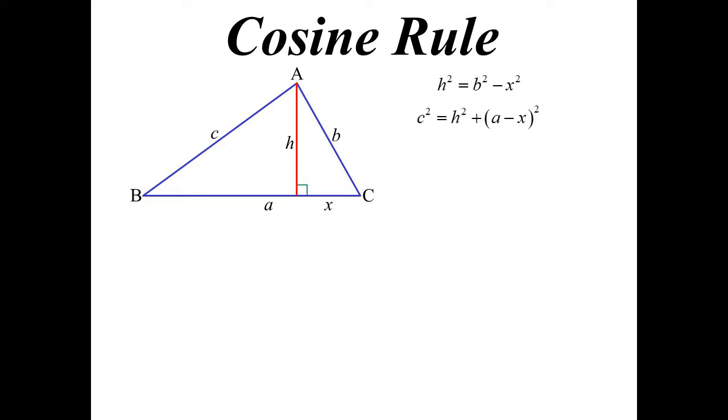C squared would be H squared plus, well, that other bit then must be A minus X. So A minus X squared. If I substitute in B squared minus X squared for H squared, I come up with the formula that actually is the cosine rule.